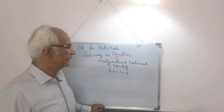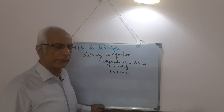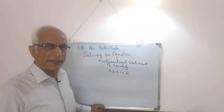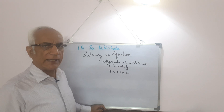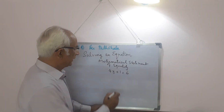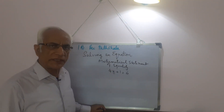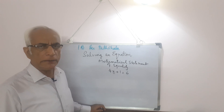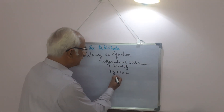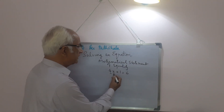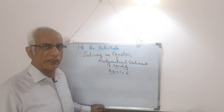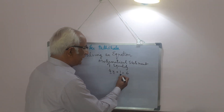An equation normally has one or more variables, which are denoted by letters like x, y, z or a, b, c or l, m, n. It also has a coefficient — a number which is multiplied to the variable and always appears before it. Here, 4 is the coefficient and x is the variable. It may also have one or more constants, which are numbers whose value does not change. Here, 1 and 6 are the constants.